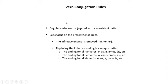These are the verb conjugation rules. Regular verbs are conjugated with a consistent pattern. There are irregular verbs, but that's not going to be discussed in this module — irregular verbs will be discussed in another module. So, let's focus on regular verbs and the present tense rules. The infinitive ending is removed as a starting point — we remove the AR, the ER, and the IR.